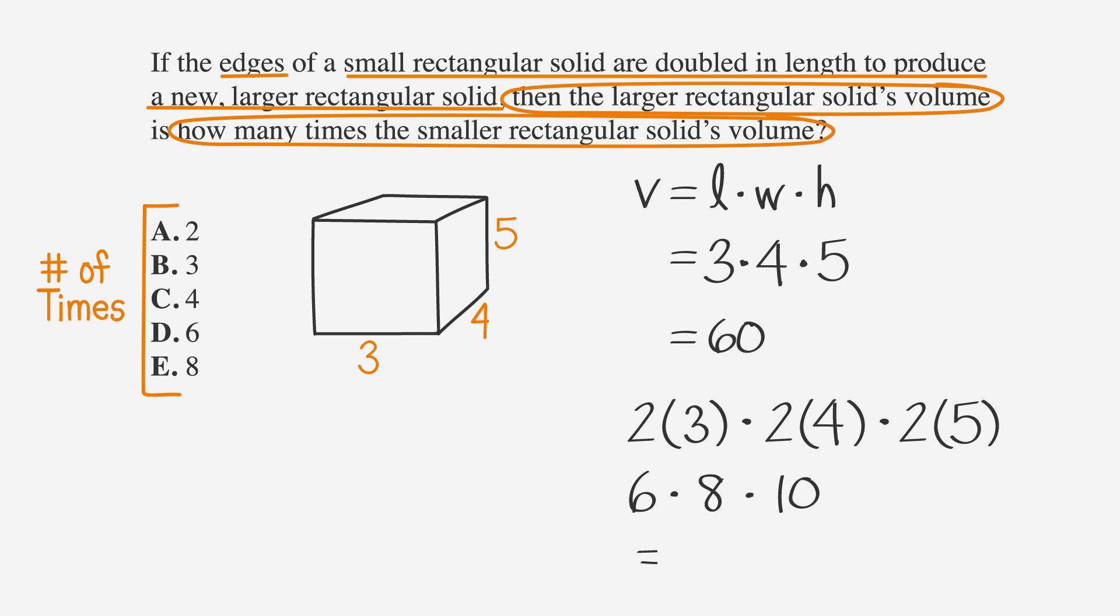Multiply them, and you'll get 480. Divide 480 by the original solid's volume, 60, to get 8, in order to find out how many times larger the volume of the second object is. And we get choice E.